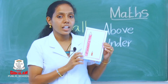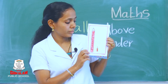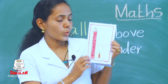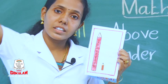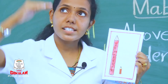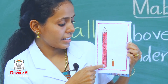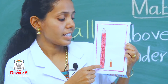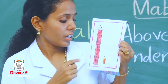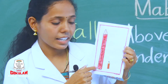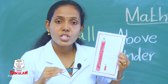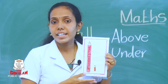Children, look. These are pencils. Do you know which pencil is tall? Can you tell me which pencil is tall? Yes — this one is tall and this pencil is short. So we can say this is tall and this is short. Is it clear students?